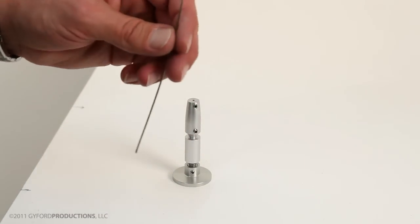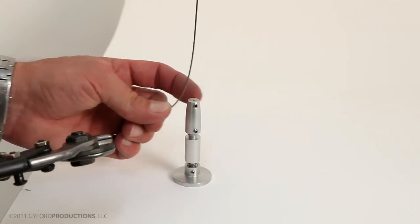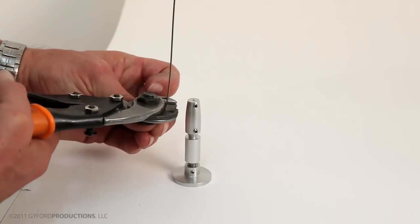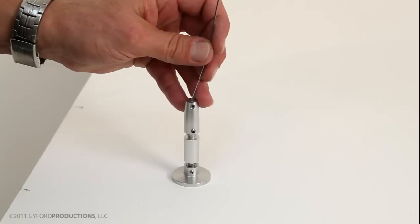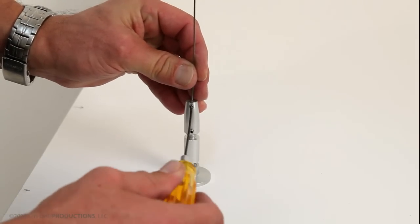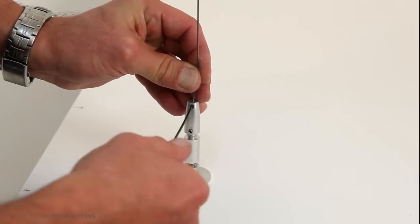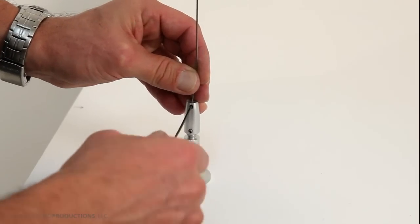Again, bring the wire down and trim it off just below the upper set screw. Set the wire in its hole, set the top set screw against it. Let's get it in there nice and firm.